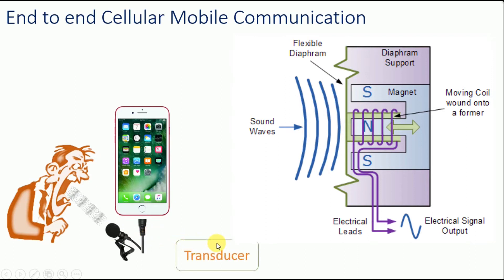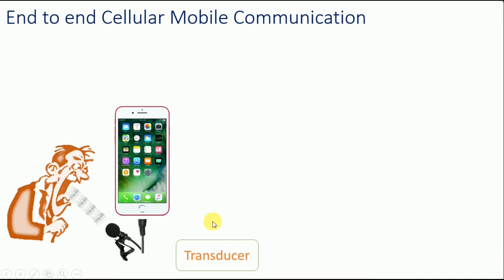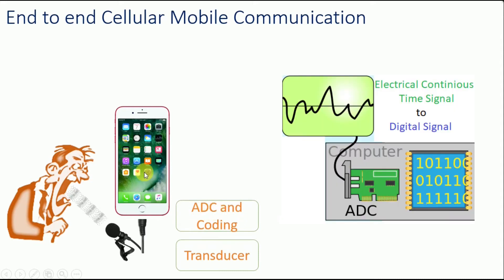The output of the transducer is a continuous time signal. As a second step, what we need is to convert that continuous time analog signal into a digital signal. This is done by means of an analog to digital converter, which is basically available on the circuit board in our cell phones.